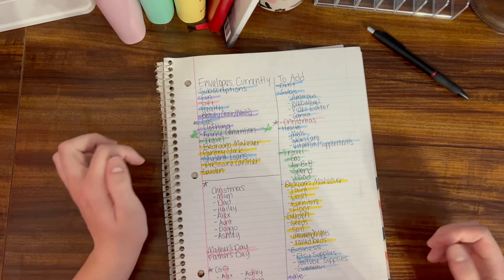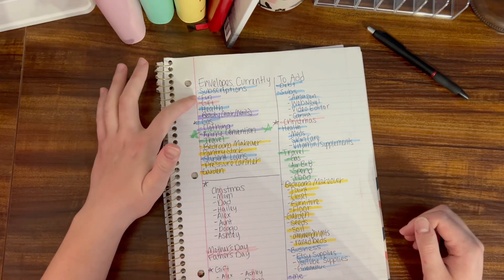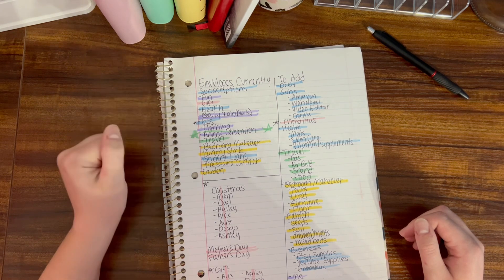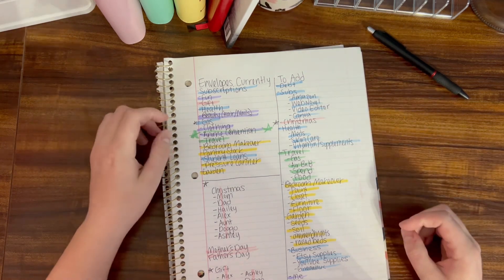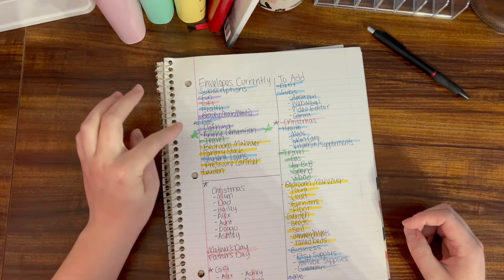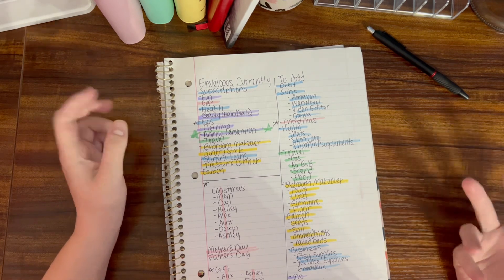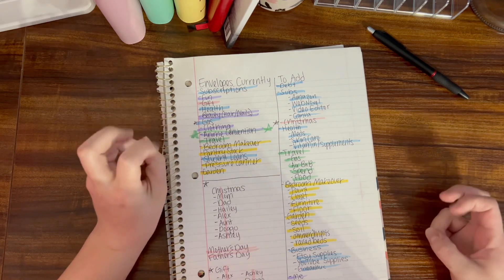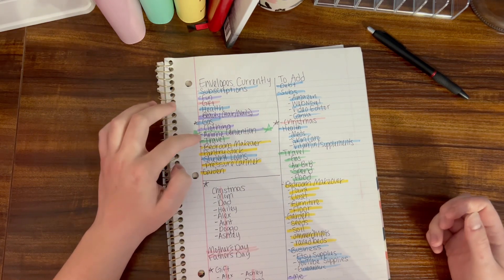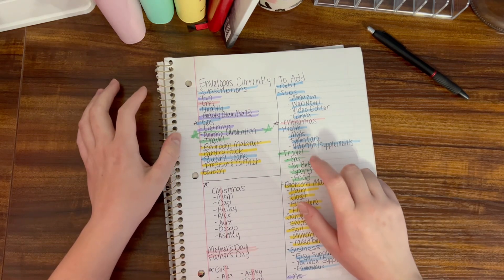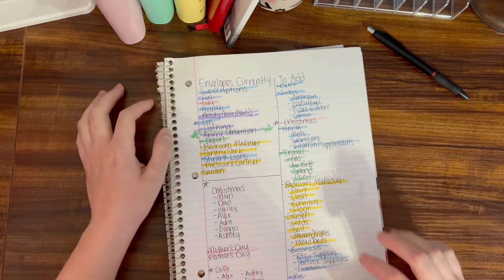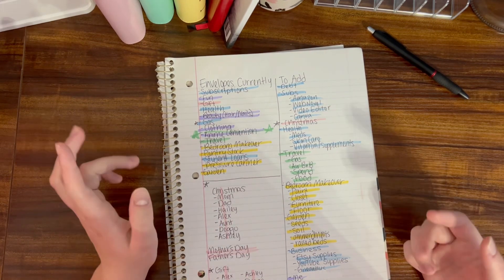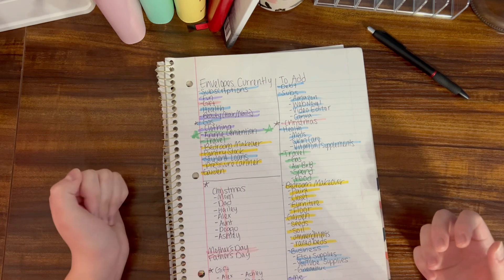Purple will have fun, beauty, hair and nails, and clothing, kind of like a me binder. Then I have green in here that'll be kind of like the brown binder - events and travel. I'll have anime convention travel, which I hope to divide into gas, Airbnb, spend, and food. I might just do divider tabs in an envelope or like a file binder.